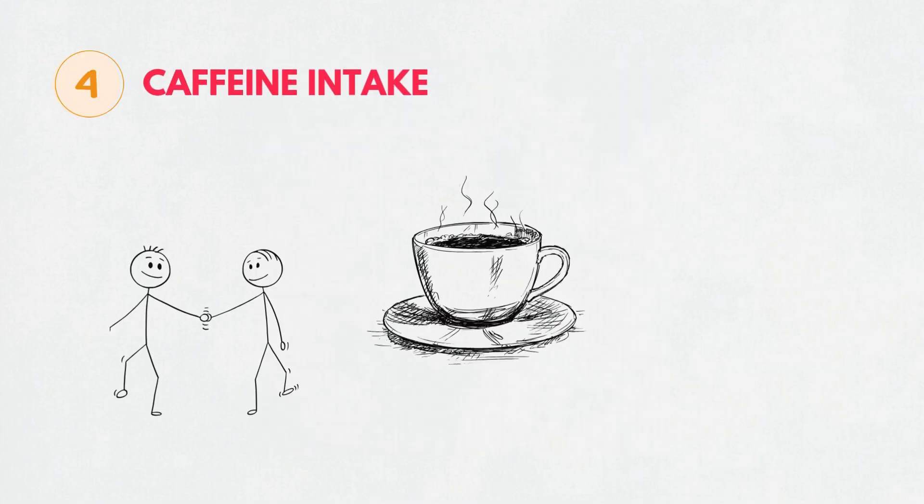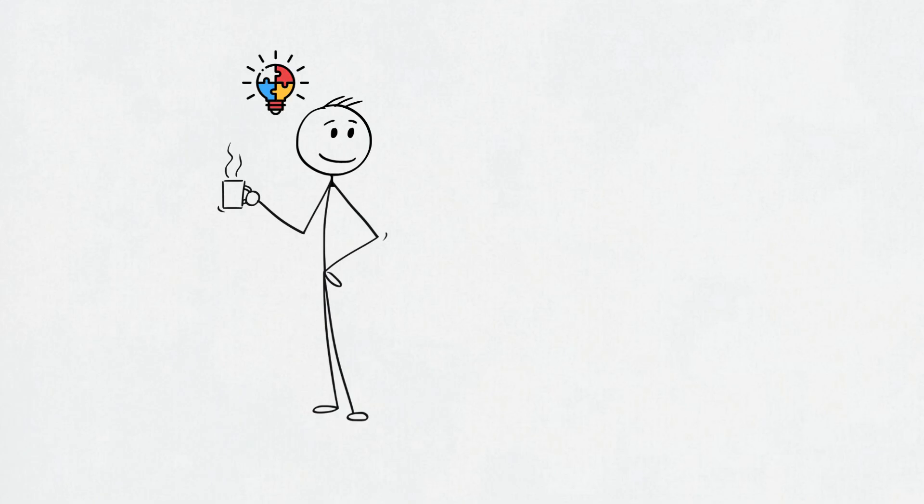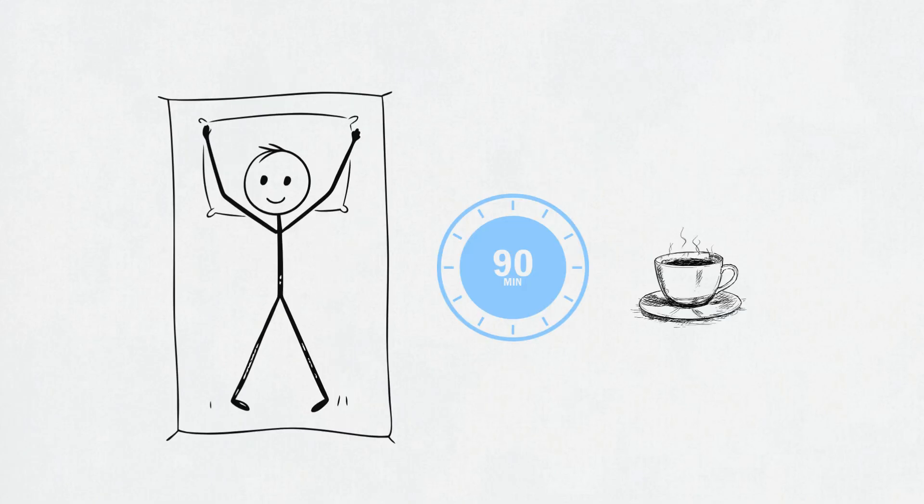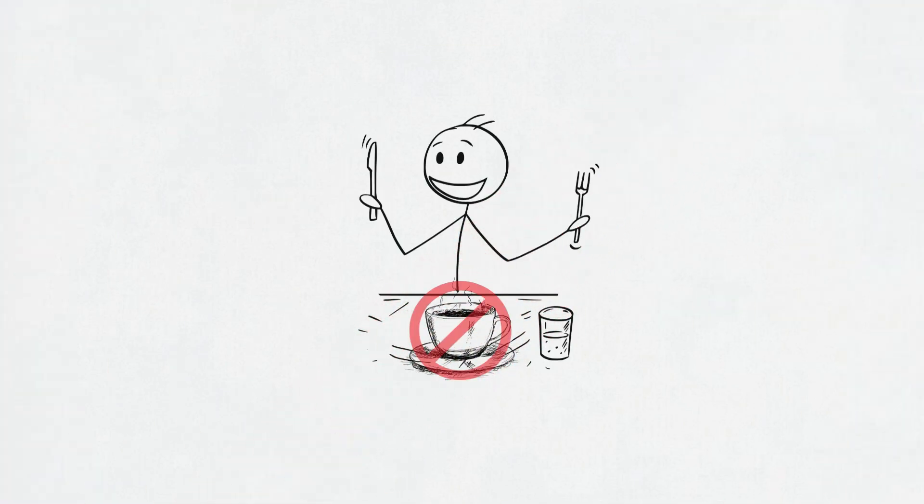Fourth, caffeine is a friend or a frenemy. Used right, it's magic. Used wrong, it's chaos. Wait 90 minutes after waking. Stick to one to two cups a day and stop drinking it before dinner.